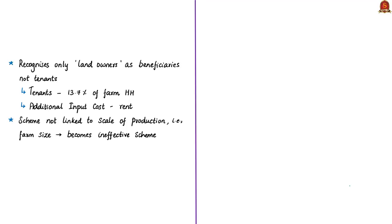Another structural problem is that PM-Kisan recognizes only land-owning farmers as beneficiaries, not tenant farmers. The author notes that tenant farmers constitute around 13.7% of farm households and have an additional input cost — the rent for the land — over and above the input cost faced by landholding farmers. Since tenant farmers do not own any land, they do not gain anything from this scheme. The author says that if the government really wants to help farmers, PM-Kisan should be broadened to include landless tenants and other poor families, like the schemes of Telangana and Odisha state governments.